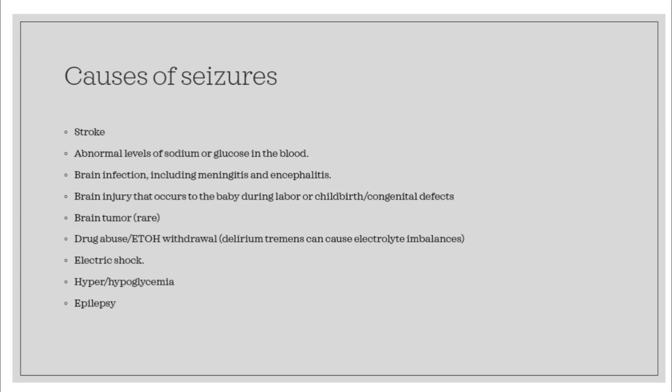Here you can see the different causes of seizures. Some of the ones I want to point out are your glucose — that's why we check BGL on our patients — you get your hypo and hyperglycemia, any kind of meningitis, tumors, drug abuse or ETOH, so delirium tremens can cause this as well.